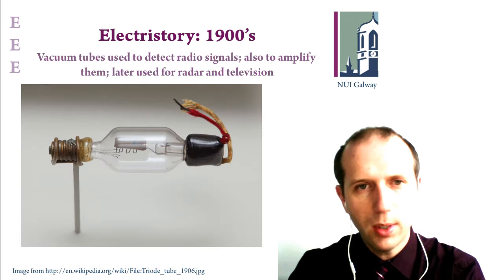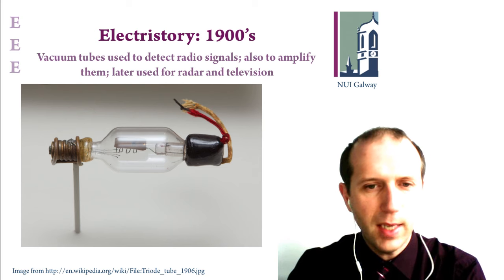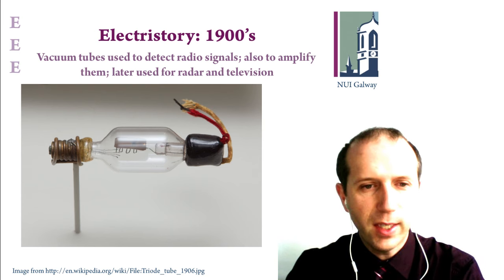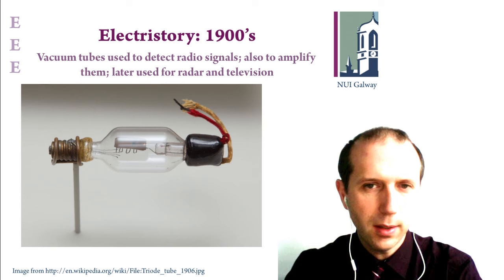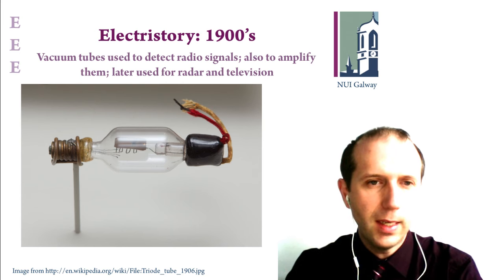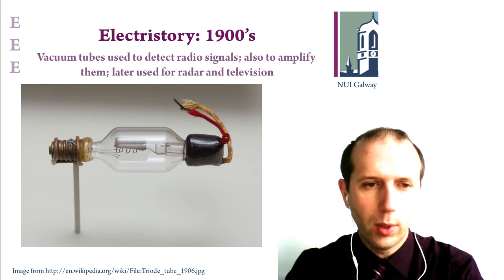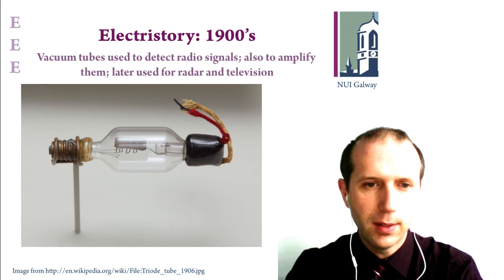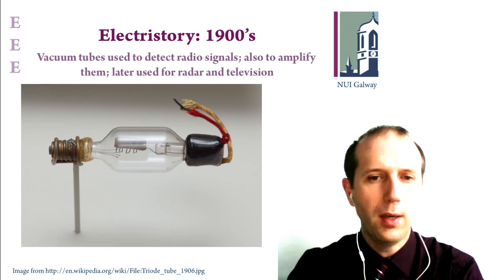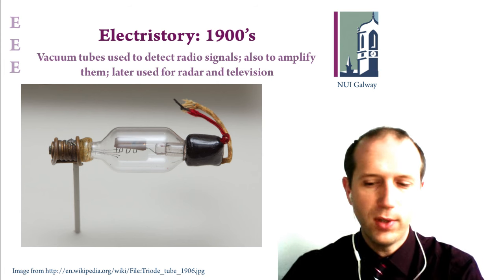Vacuum tubes came soon after in the 1900s. It was found that an electron traveling from one end of a vacuum tube to the other could detect the presence of radio signals. Later on, vacuum tubes were created that would allow you to amplify these signals, and this led to the development of not just radio, but also radar systems and television.